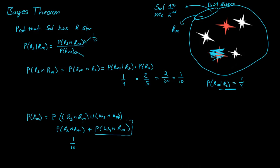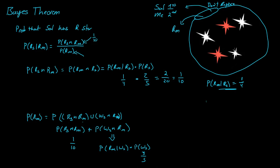What is this second part? Well, this is just an intersection and we can use a given function to solve for it. This is equal to the probability of me getting a red star given that Sal got a white star, times the probability of Sal getting a white star. What's the probability that Sal gets a white star? Well, there are three white stars out of five total. And if Sal gets a white star, there are two red stars out of the remaining four. So that's two-fourths times three-fifths, which gives us six-twentieths, or three-tenths.